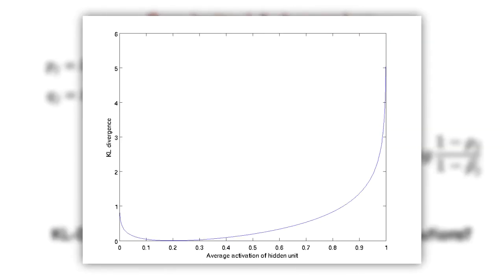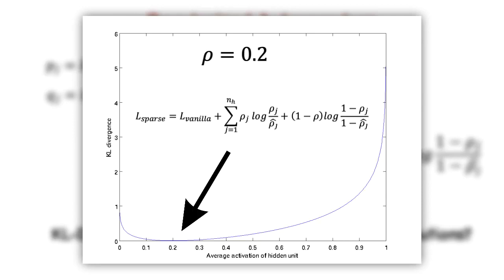This graph shows the KL divergence when rho is equal to two for sigmoid activation. Clearly it's minimum when rho is equal to rho j hat. We write the overall cost function as a sum of cost incurred from the vanilla autoencoder plus the weighted sum of KL divergences from every neuron from the threshold.